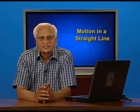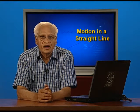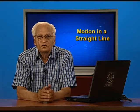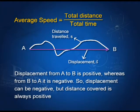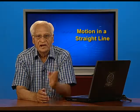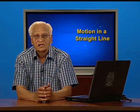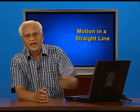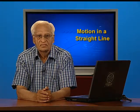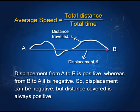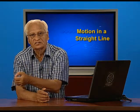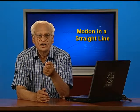Average speed is defined as the total distance covered divided by the total time taken. The distance covered depends upon the path taken. If we go from A to B along a meandering path, measuring the length along that path gives the distance travelled, whereas the direct arrow from A to B shows the displacement. Displacement from A to B is positive, and from B to A it can be negative, whereas distance covered is always positive.